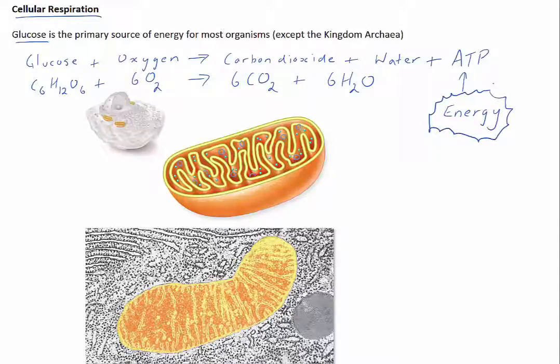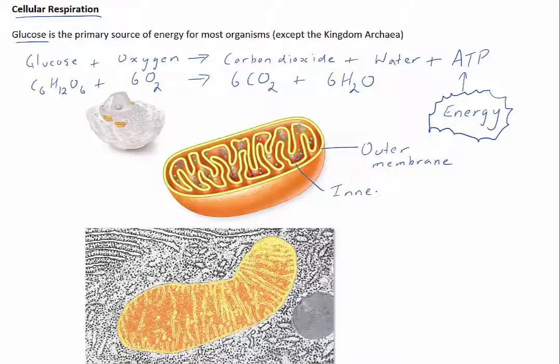In eukaryotic cells, the first stage of cellular respiration takes place in the cytoplasm. The final stages occur in mitochondria. Mitochondria are organelles scattered throughout the cytosol of the cell. Each mitochondrion consists of an outer smooth membrane and a highly folded inner membrane. The folds of the inner membrane, called cristae, protrude into the inner space of the mitochondrion, which is a protein-rich fluid called the matrix.